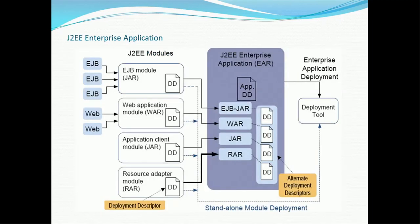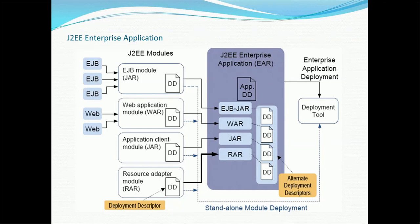Looking at the J2EE enterprise application architecture: the EJB application has J2EE modules such as an EJB module (a JAR file) with its corresponding deployment descriptor. The web application has a web module (WAR file) with its own deployment descriptor. Application client modules (Java projects) have their own JAR files, and resource adapters use RAR files. All these JAR, WAR, and RAR files have their own deployment descriptors and are grouped into the EAR project — the J2EE enterprise application archive — which contains all components.